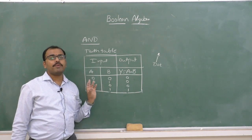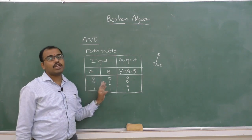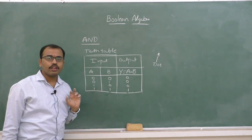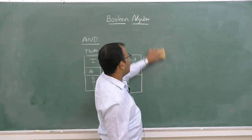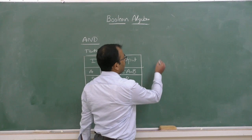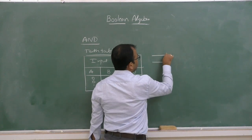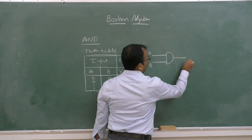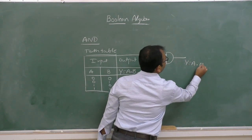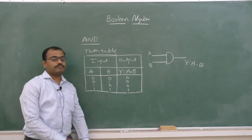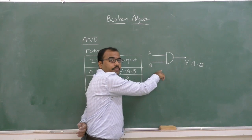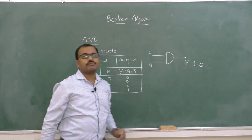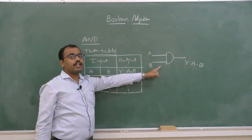This is called as logical multiplication or AND operation — logical AND operation. It is one of the Boolean operations. Now for the logic diagram or circuit symbol of AND gate: inputs a and b are on the left, and output y is equal to a dot b on the right. A and b are inputs, y is the output, and the output y is equal to a dot b.